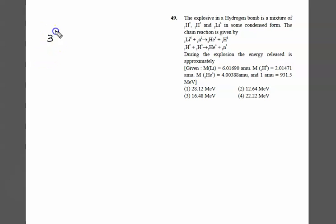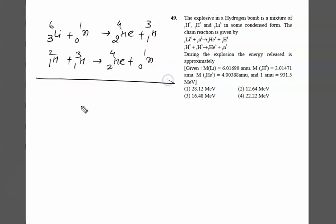This is ³Li⁶ plus neutron (⁰n¹), we are getting two ⁴He plus ¹H³. Similarly, the second equation: ¹H² plus ¹H³, we are getting two ⁴He plus ⁰n¹. So when we add both equations...